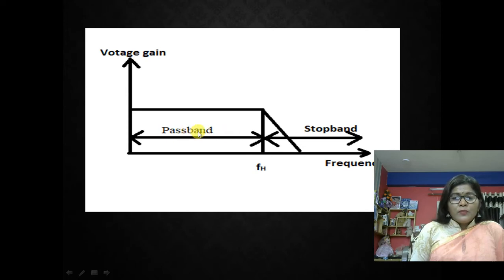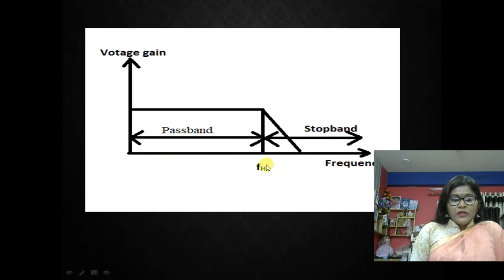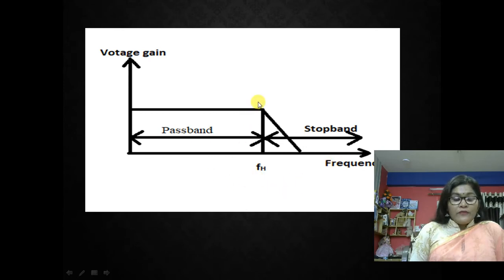The low pass filter has two bands: pass band and stop band. The x-axis represents frequency and the y-axis represents voltage gain. FH is the cutoff frequency. The low pass filter has a constant gain from 0 to FH; frequencies between 0 and FH are known as the pass band, and frequencies beyond FH are known as the stop band. At F equal to FH, the filter gain makes a sudden transition to 0, so all frequencies beyond FH are completely attenuated.